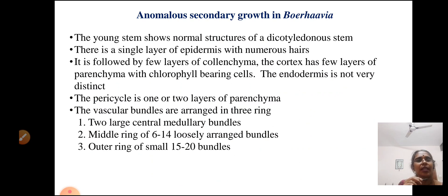So let us study the anomalous secondary growth in Boharavia. The young stem shows the normal structures of a dicot stem. There is a single layer of epidermis with numerous hairs, followed by a few layers of colenchyma. The cortex has few layers of parenchyma with chlorophyll-bearing cells, which is called chlorenchyma. The endodermis is not very prominent and the pericycle is one or two layers of parenchyma. The most interesting here is the arrangement of the vascular bundles.